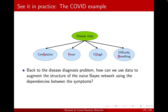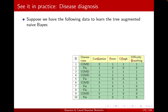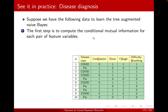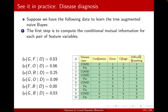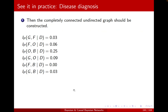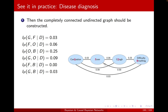Let's see it in practice. Back to the beginning example: suppose we have data to learn tree-augmented Naive Bayes with the disease class COVID or flu. We have a number of samples and we know the disease class for each of them — no missing data. The first step is to compute the conditional mutual information for each pair of variables. We have four variables, so two-out-of-four gives six pairs. If you calculate it, you get values like 0.03 and so on. The second step is to construct the completely connected undirected graph with all features as nodes, edges between them, and the conditional mutual information as edge weights — for example, congestion–fever: 0.03.